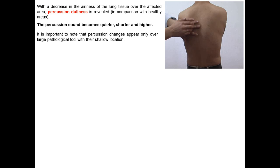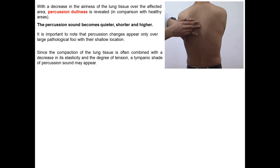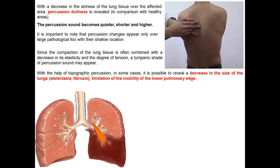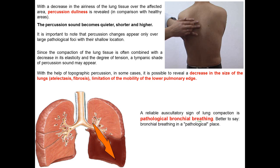With a decrease in the airness of lung tissue, percussion dullness is revealed over the affected area: the percussion sound becomes quieter, shorter, and higher. It is important to note that percussion changes appear only over large pathological foci with shallow location. Since compaction of lung tissue is often combined with a decrease in its elasticity and degree of tension, sometimes a tympanic shade of the percussion sound may appear. With the help of topographic percussion, in some cases it is possible to reveal a decrease in the size of the lung — in atelectasis or fibrosis — and limitation of mobility of the lower pulmonary edge.